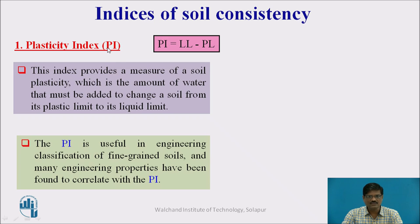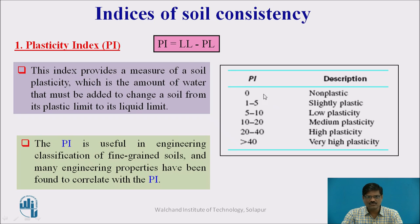PI is one of the very important indices of soil consistency, which describes the plasticity of the soil. The plasticity index is useful in engineering classification of fine-grained soil. Based on PI values: PI = 0 is non-plastic, 1–5 is slightly plastic, 5–10 is low plasticity, 10–20 is medium plasticity, 20–40 is high plasticity, and greater than 40 is very high plasticity. With increasing PI, the plasticity of the soil increases.